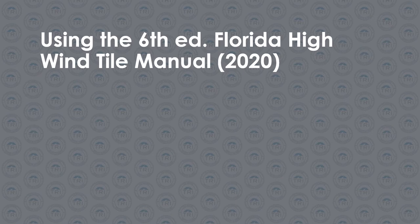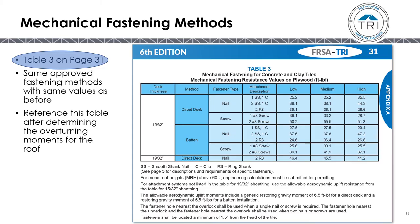Using the Florida 6th Edition High Wind Manual, let's look at some tables. Table 3, Mechanical Fastening Methods, is found on page 31 of the 6th edition. It lists the various attachment methods and the mechanical fastening resistant values in foot-pounds over plywood for low, medium, and high-profile tile. These are the aerodynamic uplift moments recorded in testing, and you'll need these values to meet or exceed your design uplift moments found on other tables.